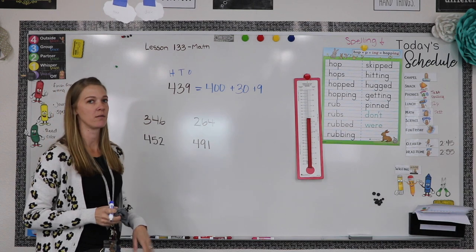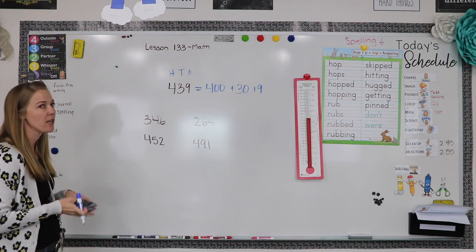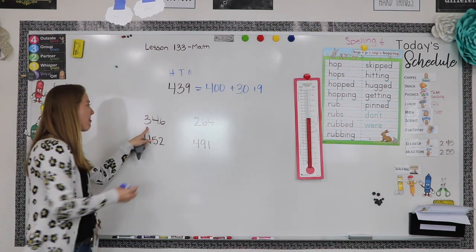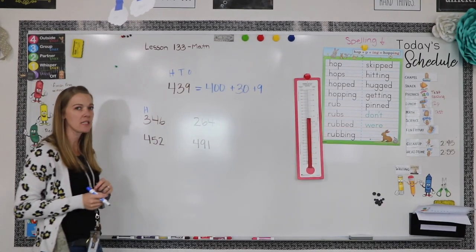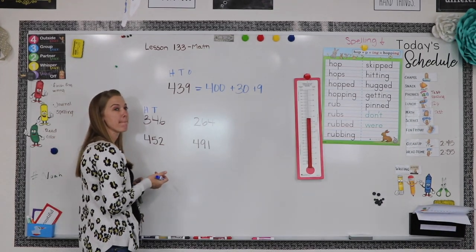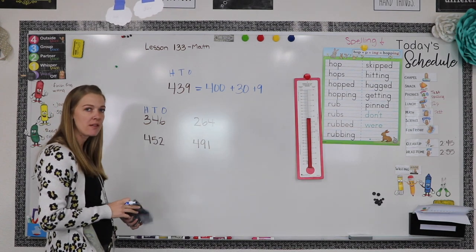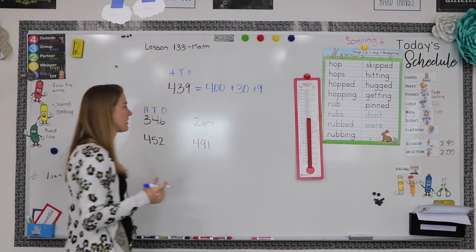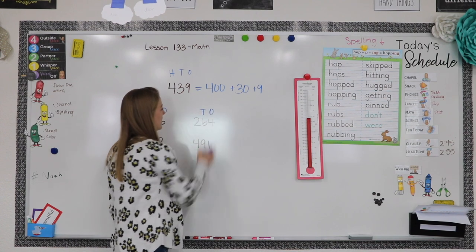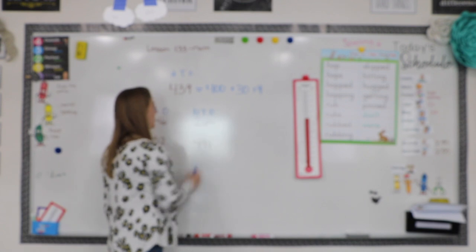Let's look at this number: 346. What number is in the hundreds place? The three. Which number is in the tens place? The four. And the ones place? Six. Now let's look at 264. The ones place is four, the tens place is six, and the hundreds place is two.